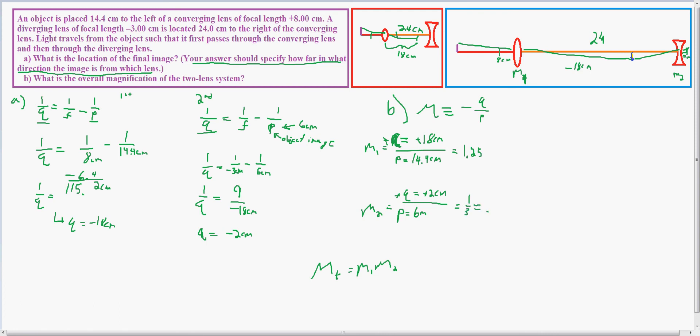Which is exactly 0.33 repeating. So the magnification total is 1.25 for M1 multiplied by M2, which is 0.33 repeating, which gives us a number that never ends with an infinite number of digits: 0.417 roughly. And this is what I write down as the answer, and that should answer part B.